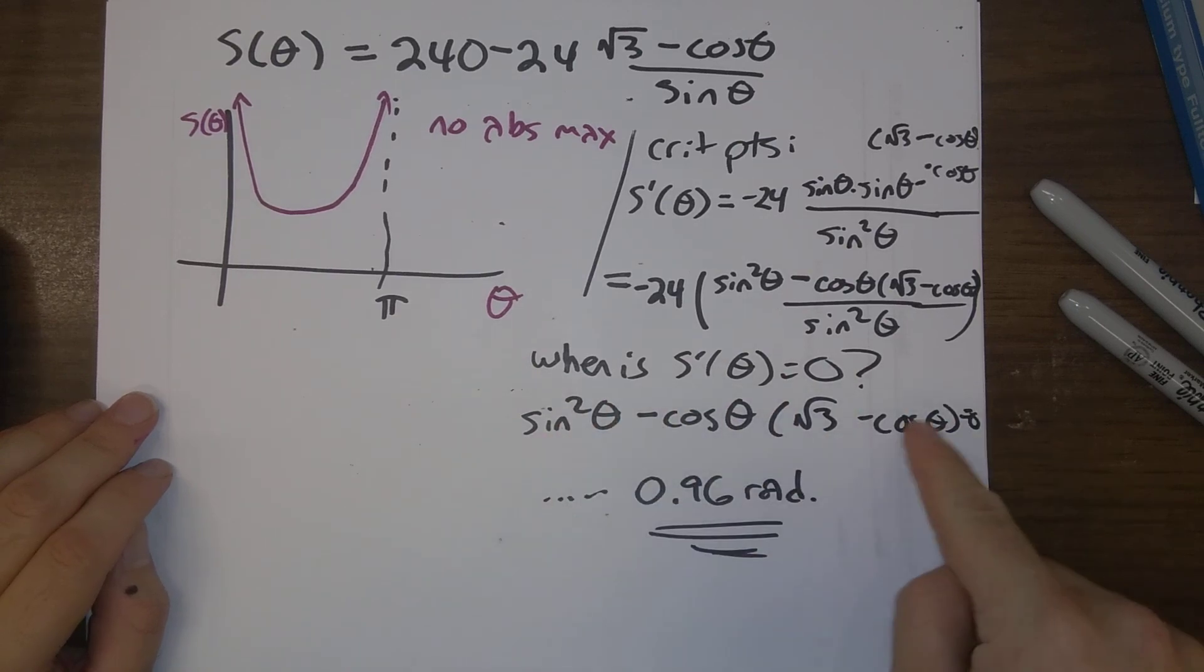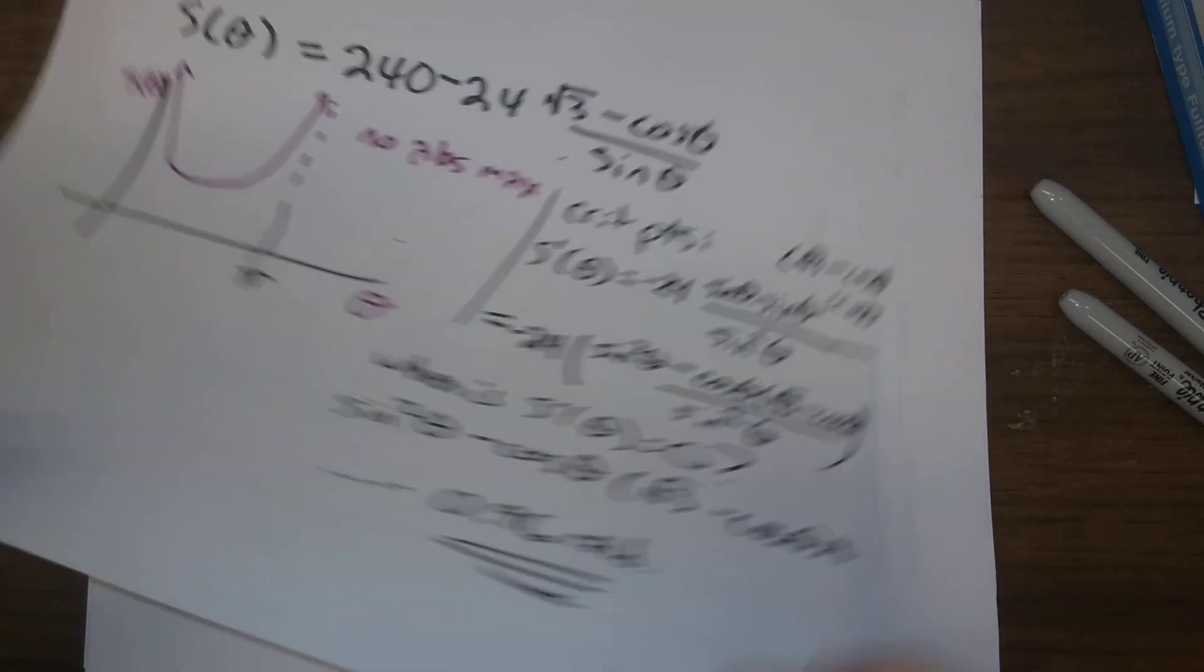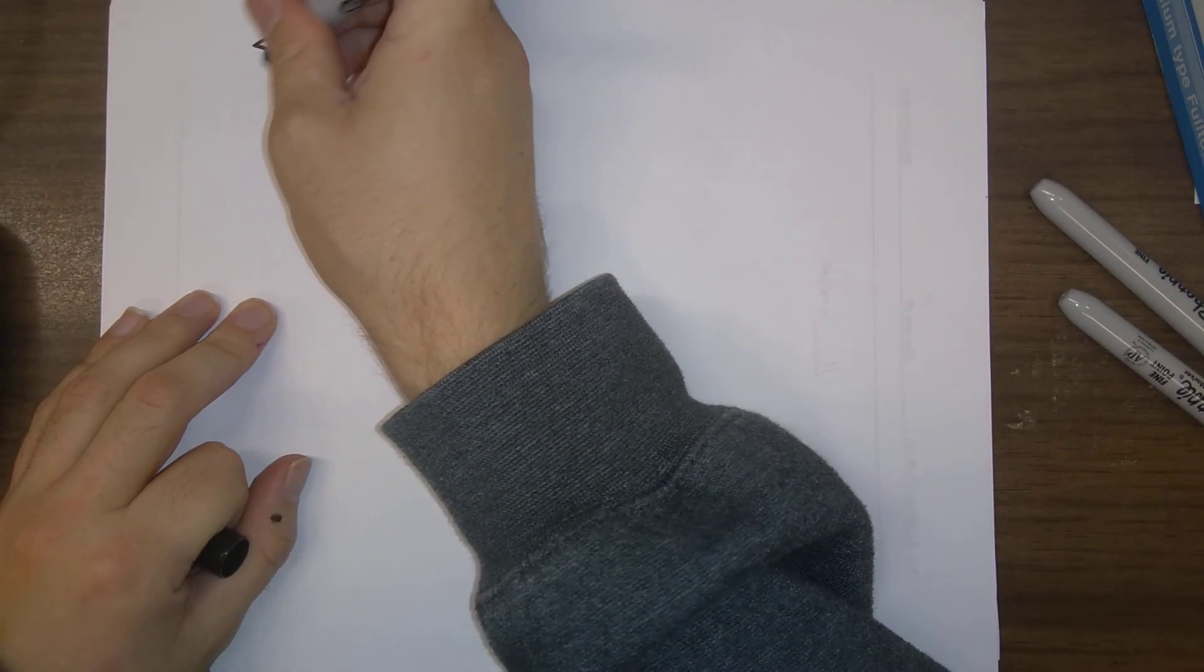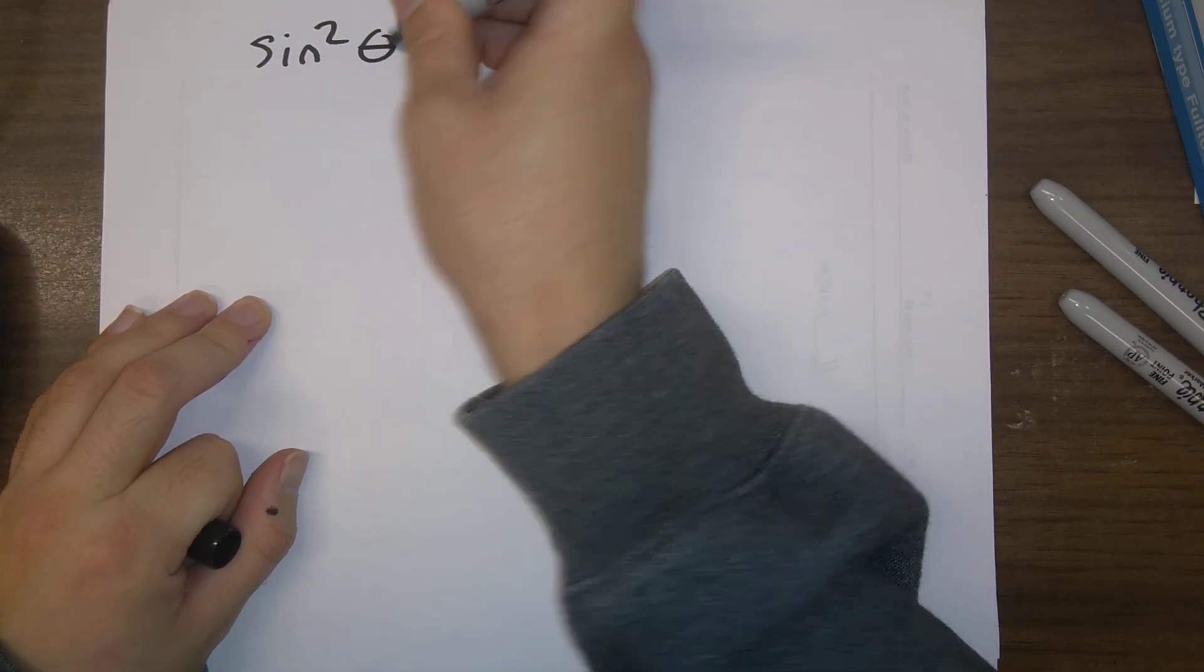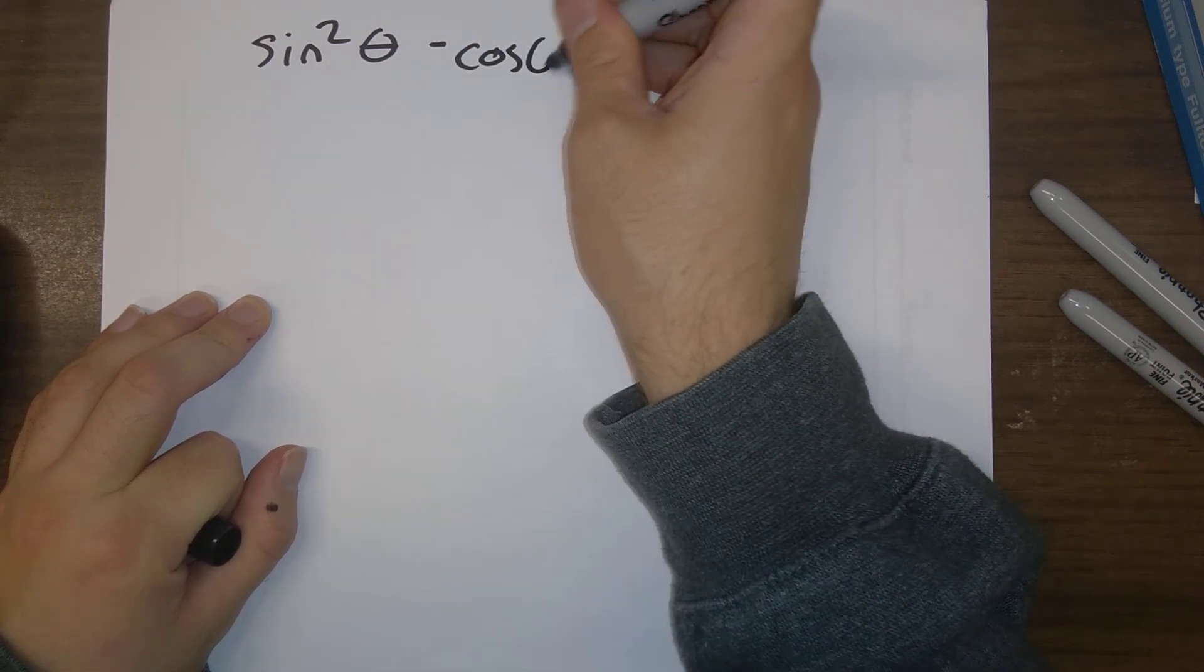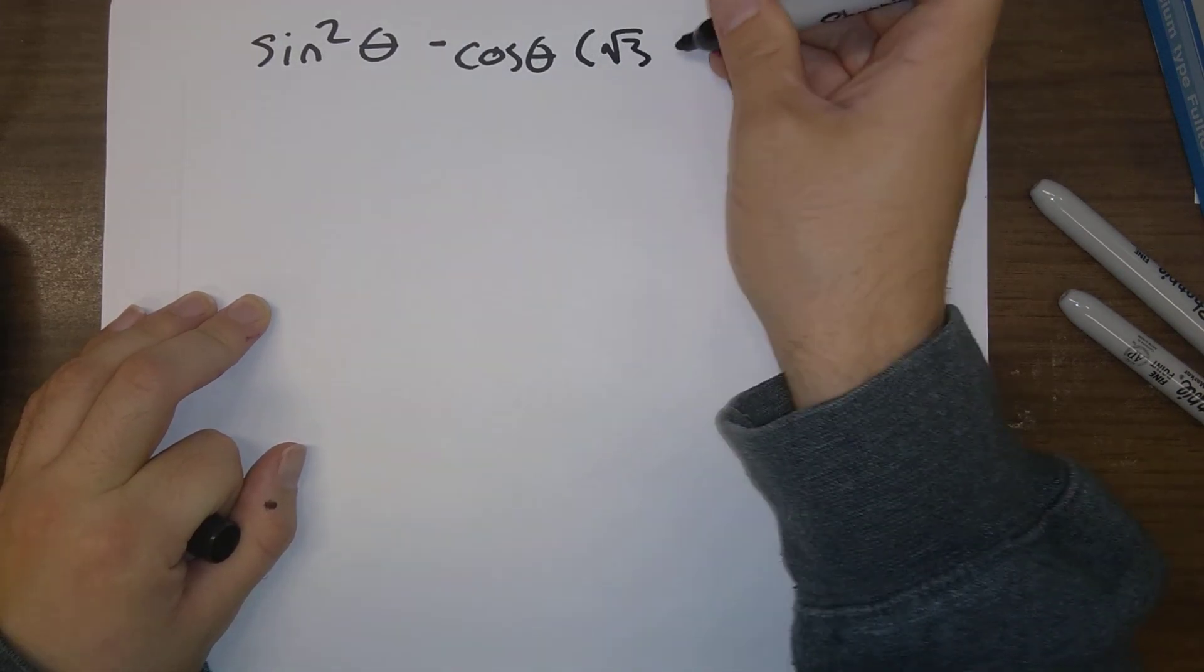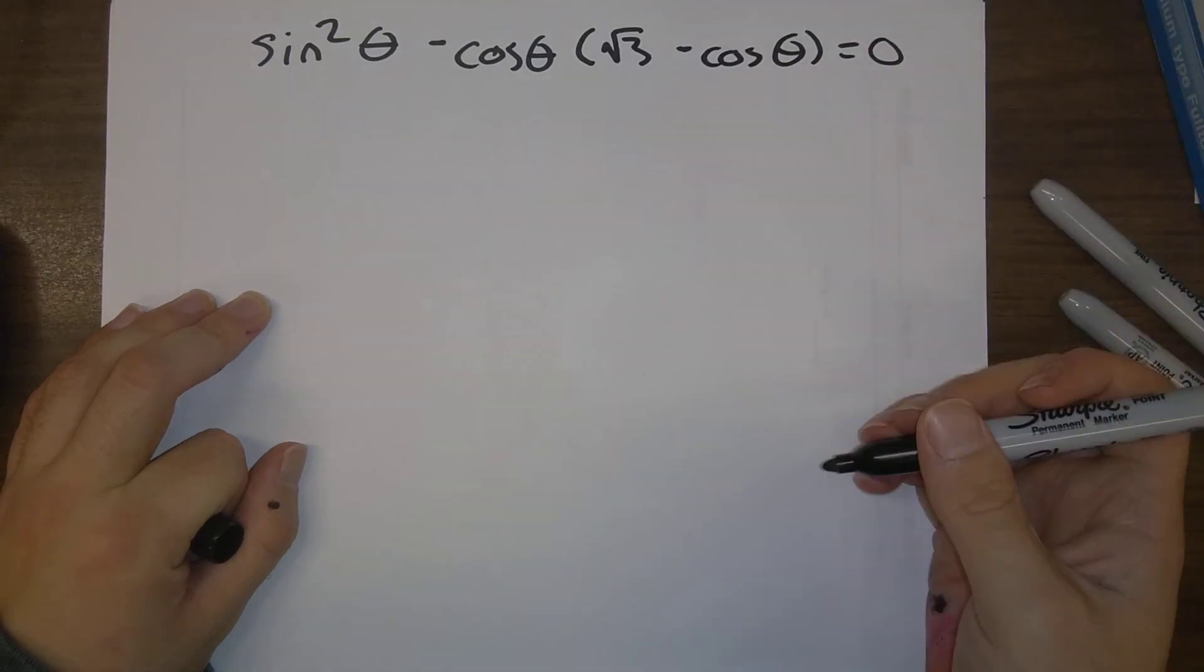Let me explain what's going on here. So we're trying to solve this is equal to zero. Let's do that. So to recopy, we're trying to solve sine squared theta minus cosine theta times root three minus cosine theta is equal to zero.